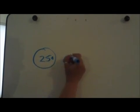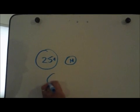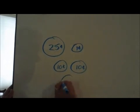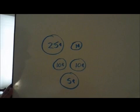Now we're going to add up some coins. We have these five coins: a quarter worth 25 cents, a dime worth ten cents, another dime, a nickel, and a penny. I'm going to record up here what we have — 25 cents, a penny, a dime (ten cents), another dime (ten cents), and a nickel (five cents).